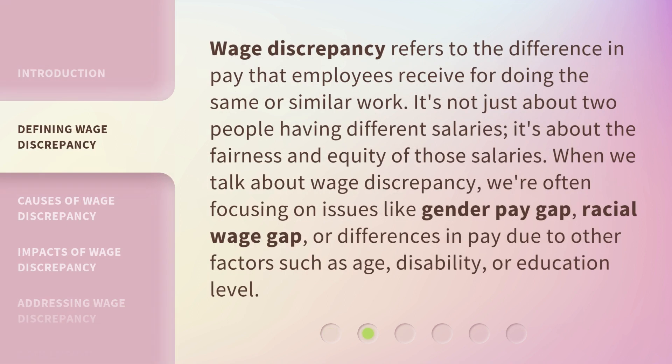Wage discrepancy refers to the difference in pay that employees receive for doing the same or similar work. It's not just about two people having different salaries — it's about the fairness and equity of those salaries. When we talk about wage discrepancy, we're often focusing on issues like the gender pay gap, racial wage gap, or differences in pay due to other factors such as age, disability, or education level.